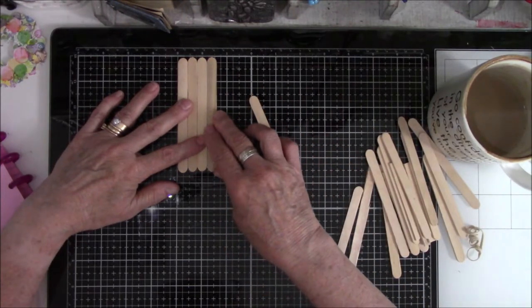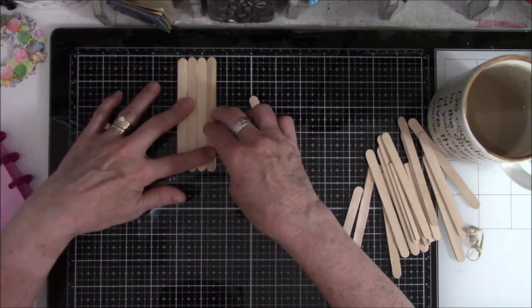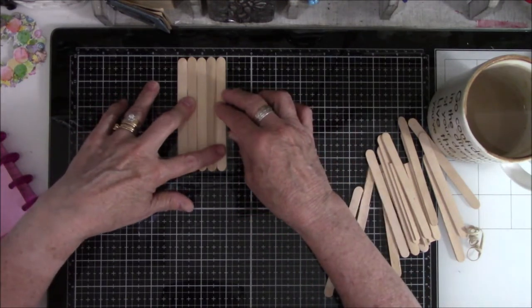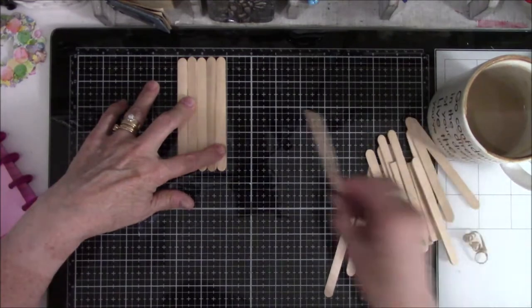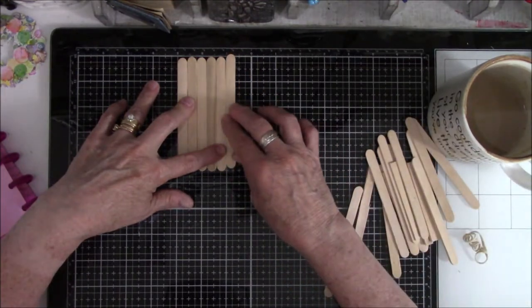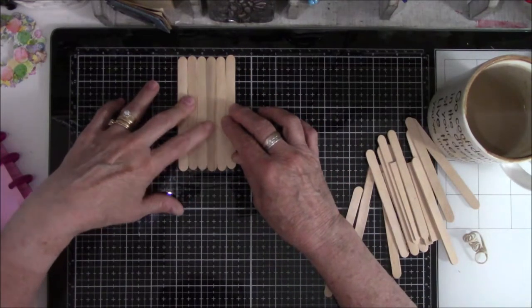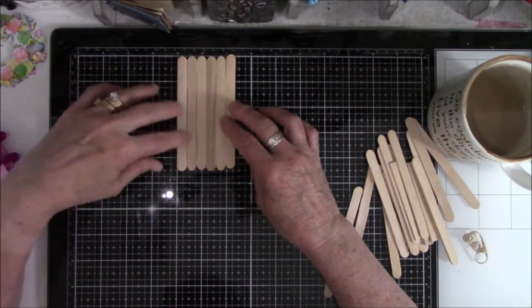I'm trying to make sure that they fall within the two and a half inch width of an ATC. The width is two and a half inches by three and a half for the height.